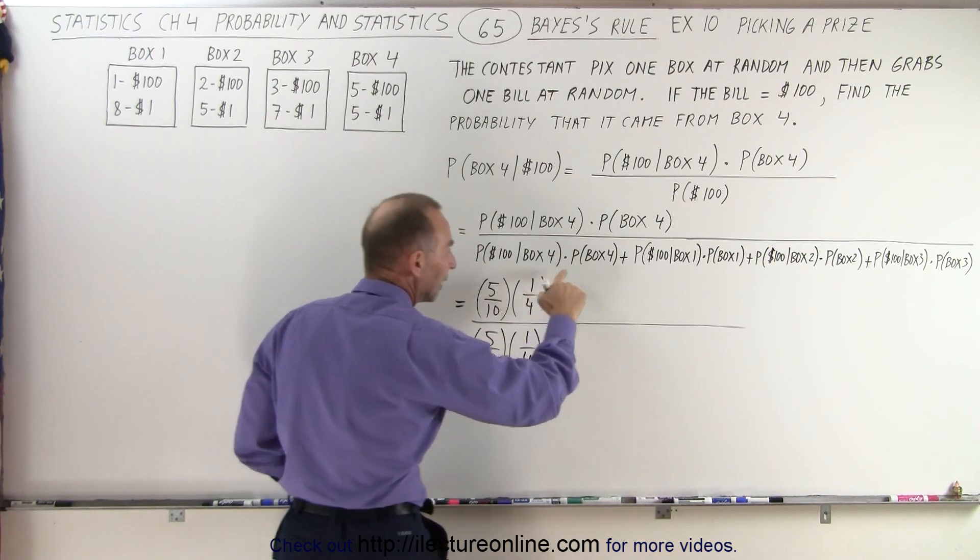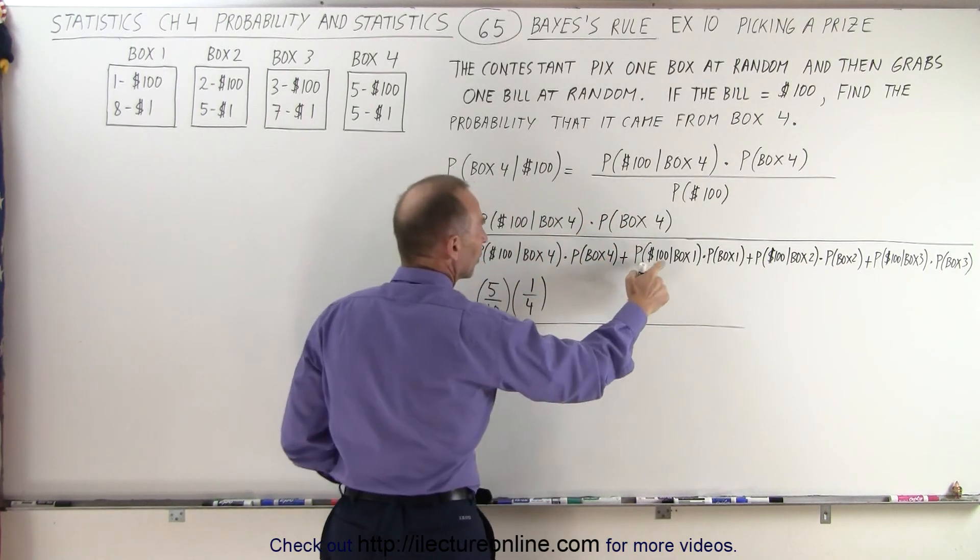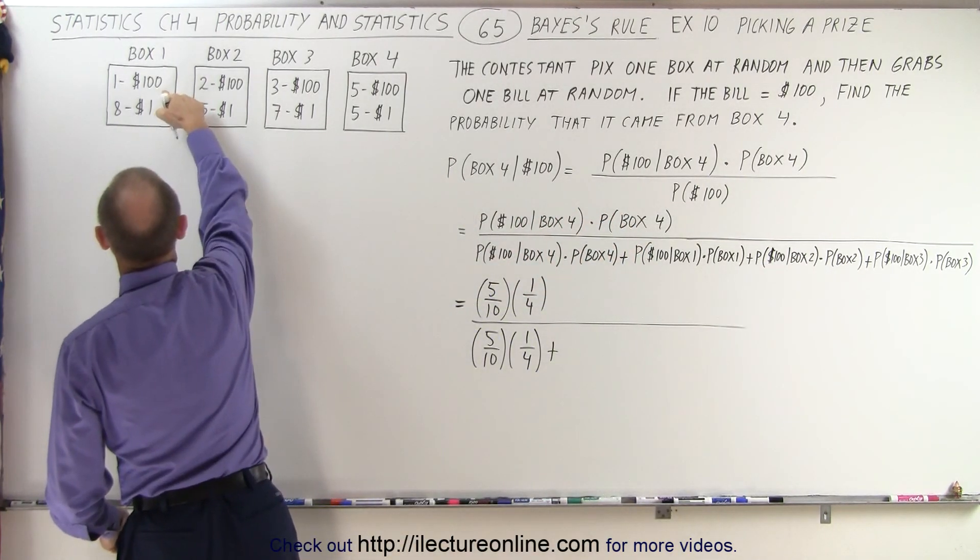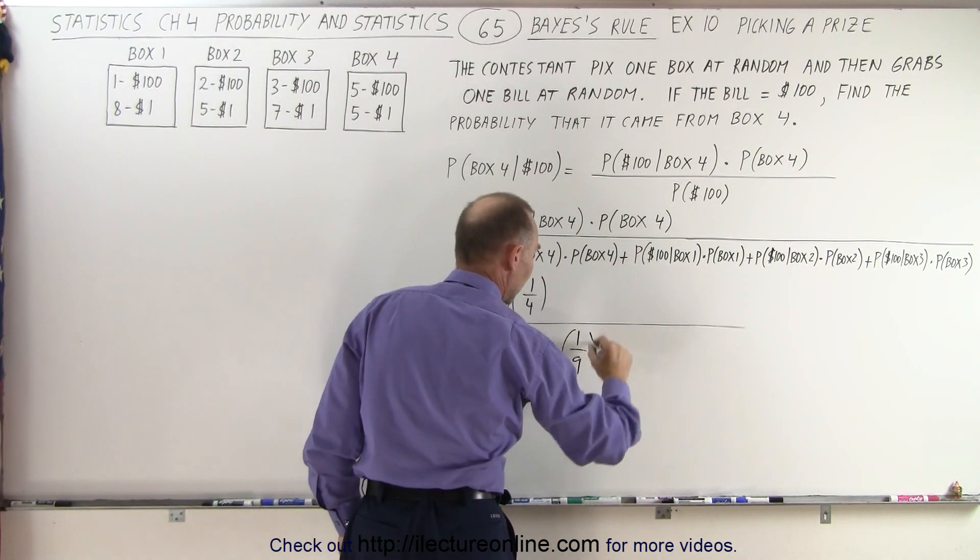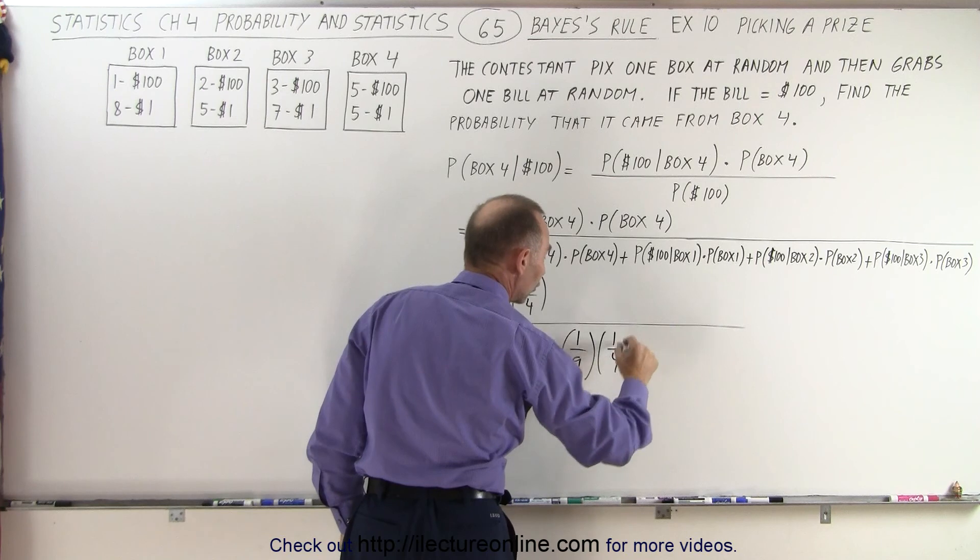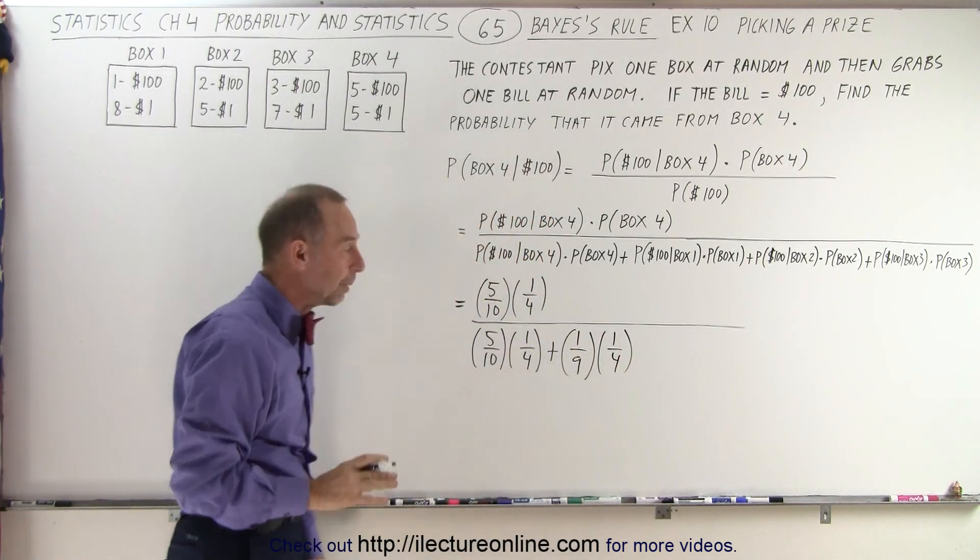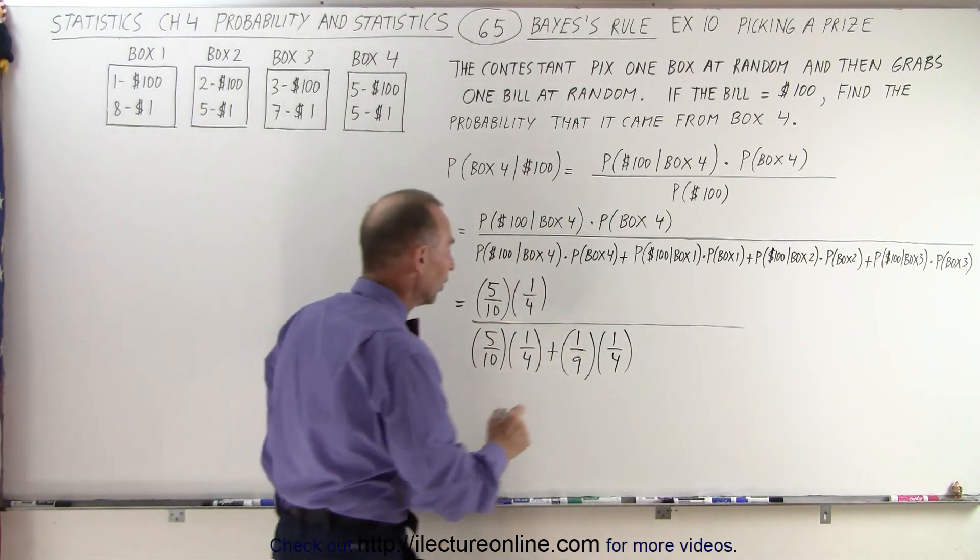But now we have to do that for the other three boxes. The probability that we pick a $100 bill given it came from box one, that would be one out of nine. And of course, the probability that we pick that box is also one out of four. It's an equal probability of picking each of the boxes. So continuing,